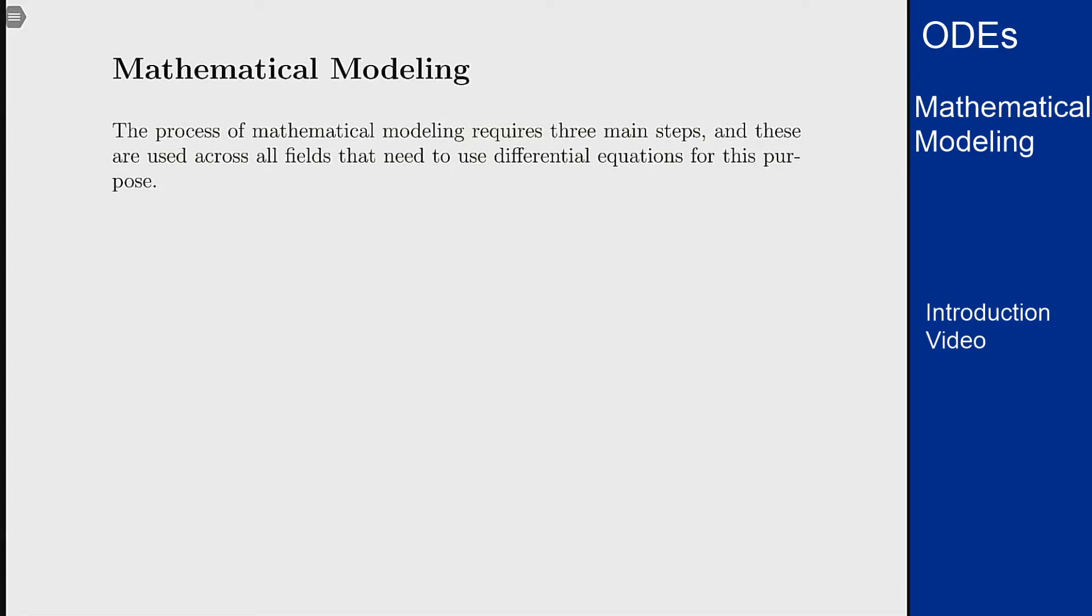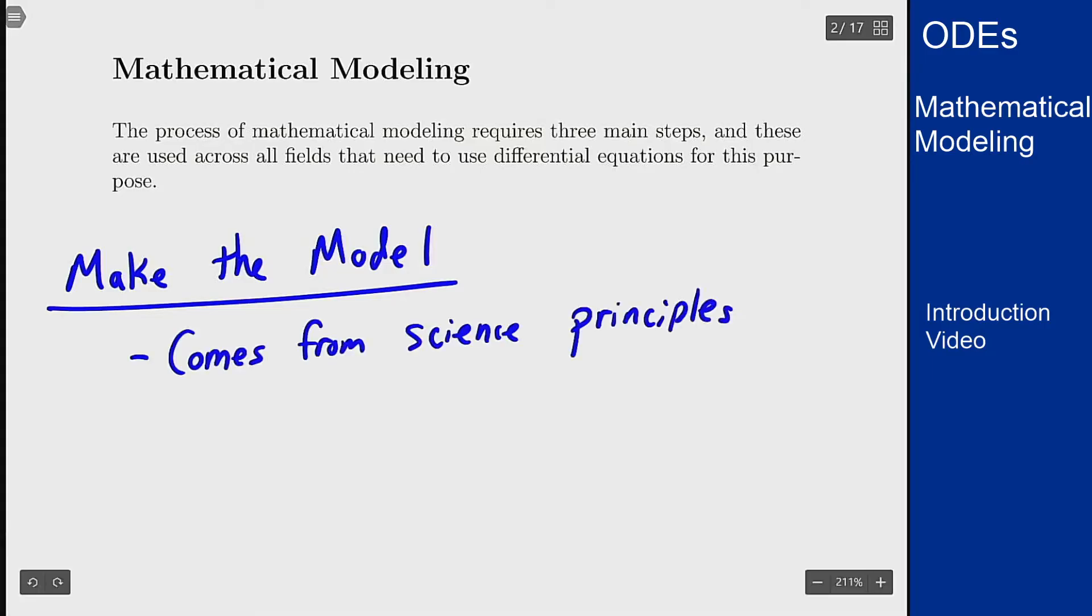The first of those is to come up with some sort of model, some sort of equation that is going to model what's going to happen in the physical system. This really comes from physical principles or science equations that we know and want to use to then put together a differential equation that models this physical system. This can also come from things like the accumulation equation as the basis for writing this differential equation.